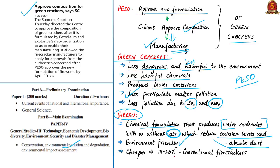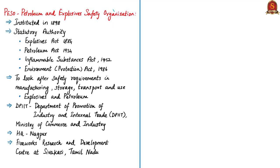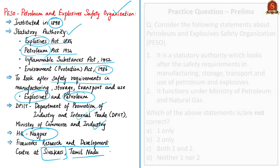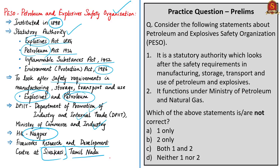Green crackers are environment friendly and are expected to be cheaper than conventional crackers by around 15 to 20 percent. The Petroleum and Explosive Safety Organization was instituted in 1898 as a statutory authority, entrusted with responsibilities under the Explosives Act 1884, Petroleum Act 1934, Inflammable Substance Act 1952, and Environment Protection Act 1986. Its present purpose is to look after safety requirements in manufacturing, storage, transport, and use of explosives and petroleum. It comes under the Department of Promotion of Industry and Internal Trade under the Ministry of Commerce and Industry, headquartered in Nagpur. It has a fireworks research and development center at Sivakasi in Tamil Nadu.